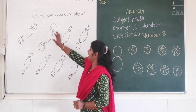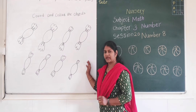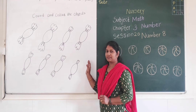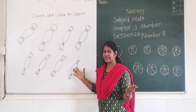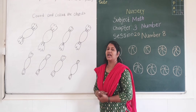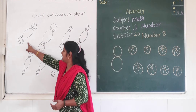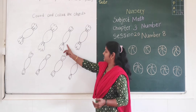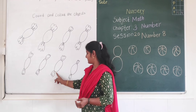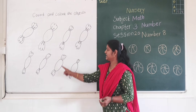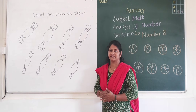Count and color the objects. Can you tell me which objects are here on this whiteboard? These are chocolates. We have to count and color them: 1, 2, 3, 4, 5, 6, 7, 8. 8 chocolates are here. And we have to color them.